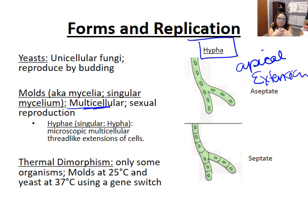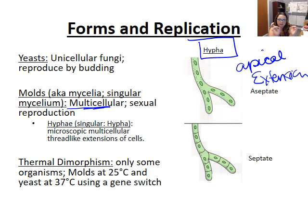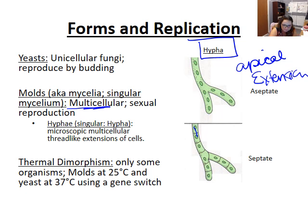Hyphae can form together into a mat-like structure called a mycelium. The colonies appear filamentous, hairy, or woolly — that fuzzy appearance you see on molded food is a result of this mycelium. Within hyphae, the structure can be septate or aseptate, which denotes whether or not there is a cell wall between the cells. Regardless, cytoplasm flows freely through, and this distinction can be helpful for determining the type of organism.